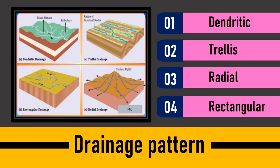The next pattern is trellis. In this pattern, the main stream is joined by short, small flowing streams. When there are small rivers joining a large main river, it makes a trellis pattern. You can see in the diagram: one large main river is joined by small tributaries — that is what trellis is.